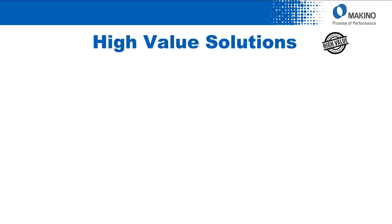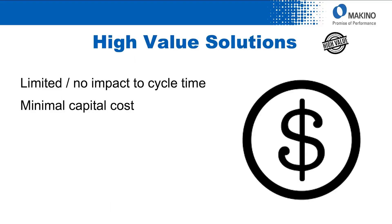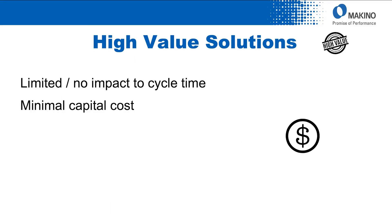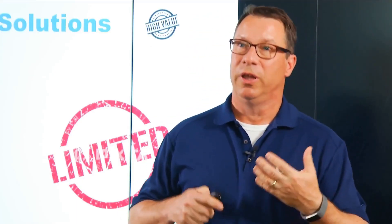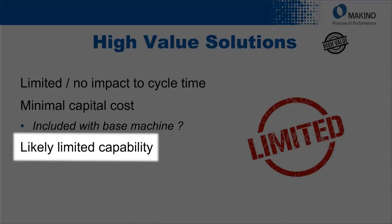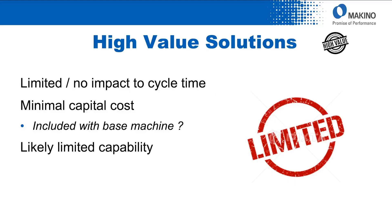So let's look at some alternatives to the high precision solution — the high value alternatives. Really focusing on limited to no impact to the overall cycle time. Eliminate completely that measurement time, but still get the data you need to add process control to the overall solution. In addition, minimization of the capital costs — a simpler system, or maybe even a system that's standard with the base machine. What you need to understand with the high value solutions, though, is they have very limited capability relative to the open page of data you collect with high precision solutions — much more limited data, really giving you the ability to detect a broken tool. Broken tool sensing is going to be the data that you're often limited to in this case.